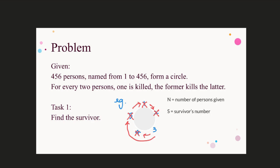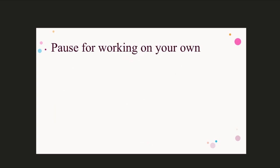To make things simple, let N denote the number of persons given, and S stands for the survivor's number. So in this example, N is 5 and S is 3. In our task, N is 456 and we look for the value of S. I suggest you pause the video and work on your own.